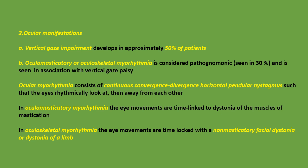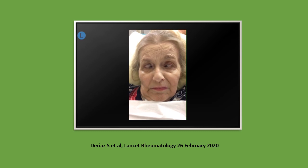Ocular myorrhythmia consists of continuous convergence-divergence horizontal pendulum nystagmus, such that the eyes rhythmically look at and then away from each other. In oculomasticatory myorrhythmia, eye movements are time-linked to dystonia of the muscles of mastication. In oculoskeletal myorrhythmia, eye movements are time-locked with a non-masticatory facial dystonia or dystonia of a limb.